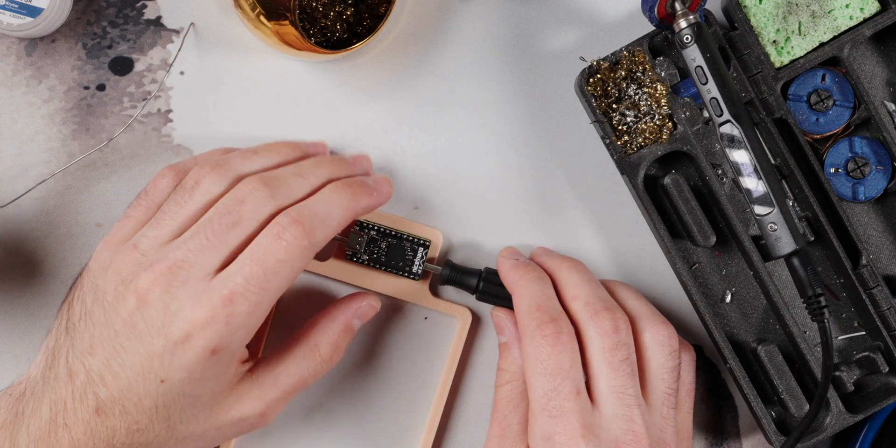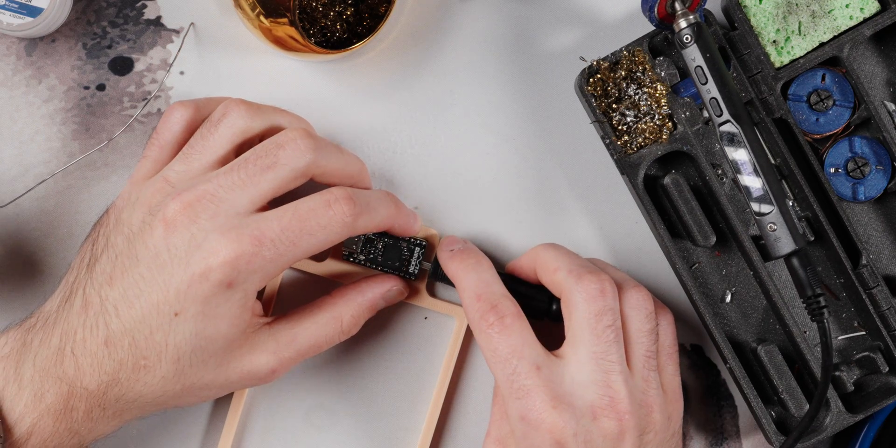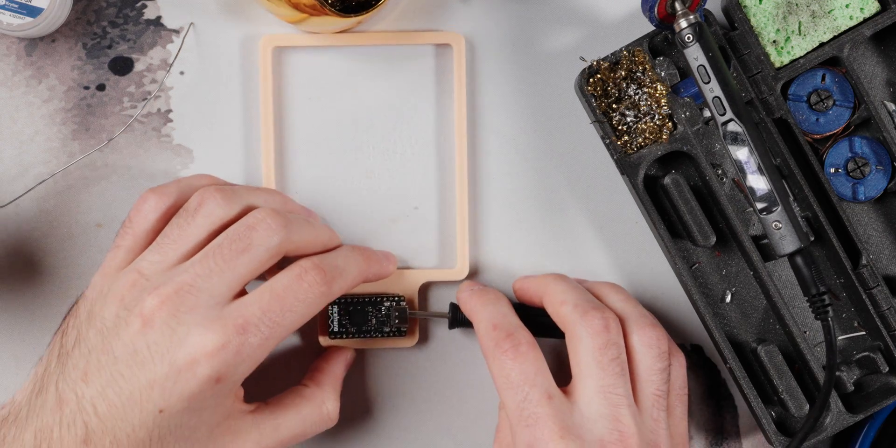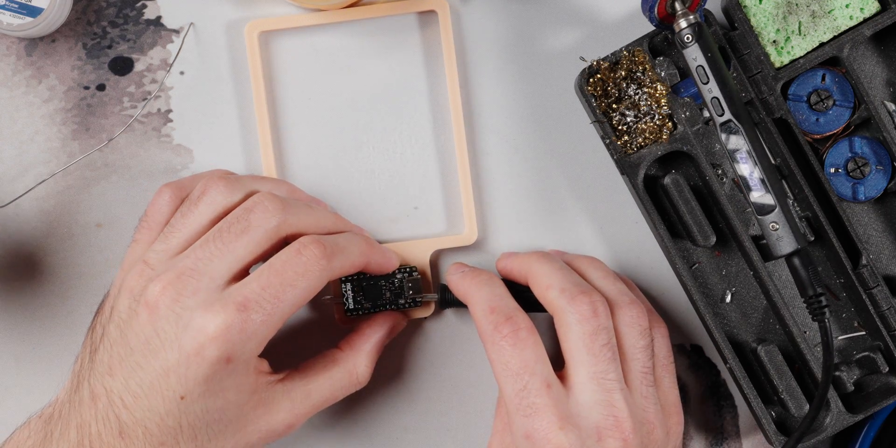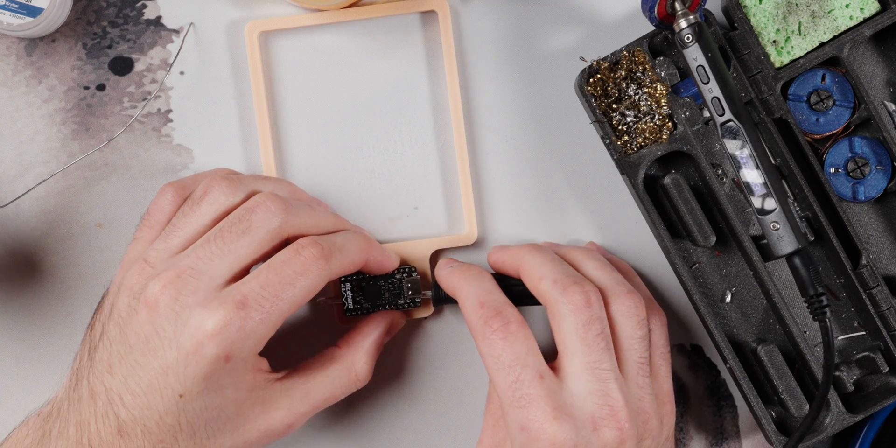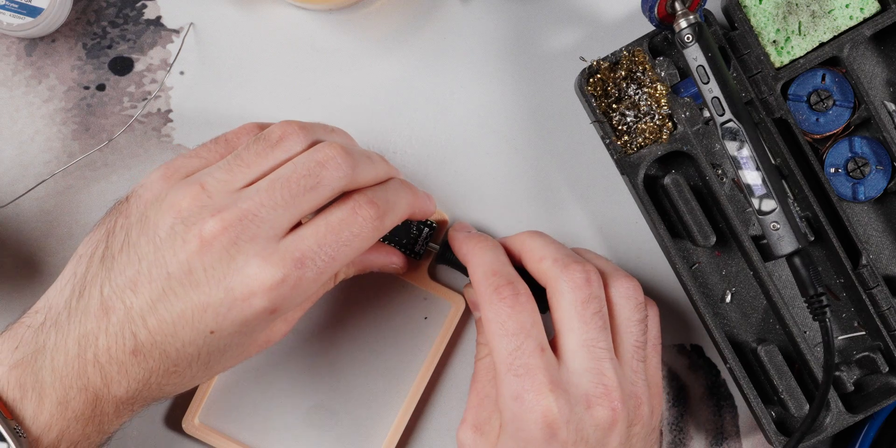But if your controller does have stuff on the bottom, this is probably not the proper way to do this. But with this one I'll just kind of take it, I'll gently lever it up there, and then on this other side I'll make sure not to hit the USB-C port, just gently lever it up there again.